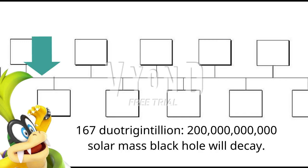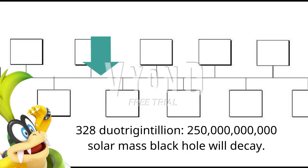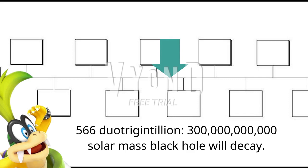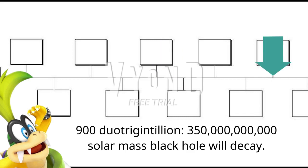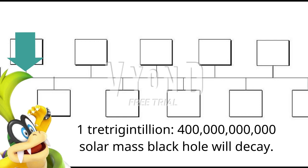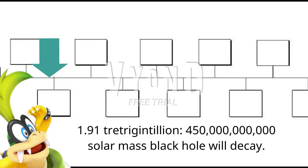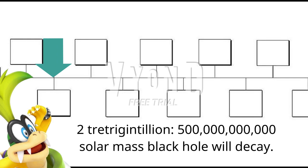167 Duotrigentillion: a 200 billion solar mass black hole will decay. 328 Duotrigentillion: a 250 billion solar mass black hole will decay. 566 Duotrigentillion: a 300 billion solar mass black hole will decay. 900 Duotrigentillion: a 350 billion solar mass black hole will decay. 1 Tretrigentillion: a 400 billion solar mass black hole will decay. 1.91 Tretrigentillion: a 450 billion solar mass black hole will decay. 2 Tretrigentillion: a 500 billion solar mass black hole will decay.